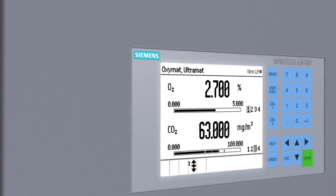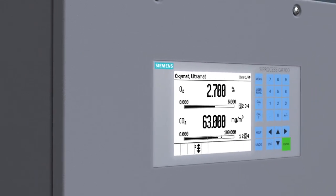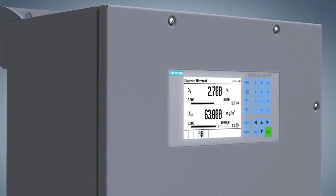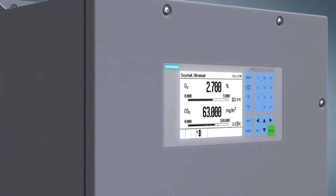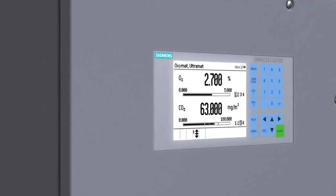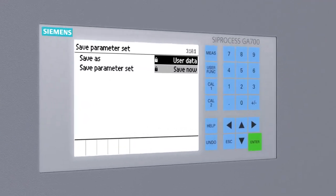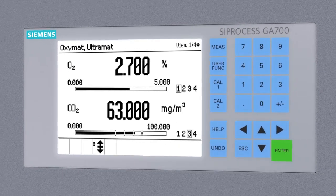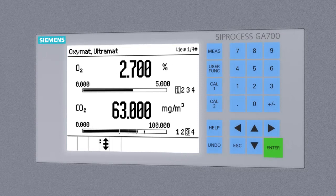All ZProcess GA700 systems are controlled via a uniform operating concept. The large graphic LCD display features high contrast and is thus easily readable. Device operation is clearly presented and easily understandable in order to avoid error sources and downtimes. Customer-specific calibrations can be saved and easily transferred when a module is exchanged.